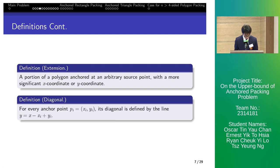Next, extensions are proportions of polygons drawn by some source point with x or y coordinates more significant. The diagonal of any anchor point PI is defined as the line y equals x minus xi plus yi.